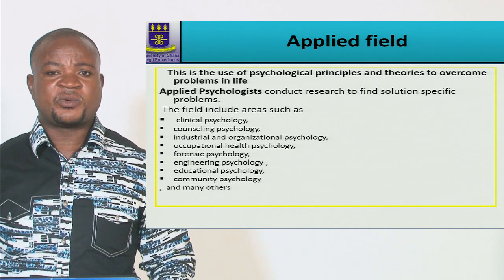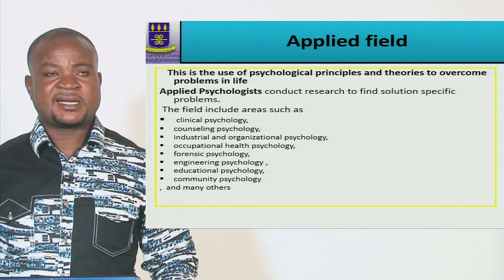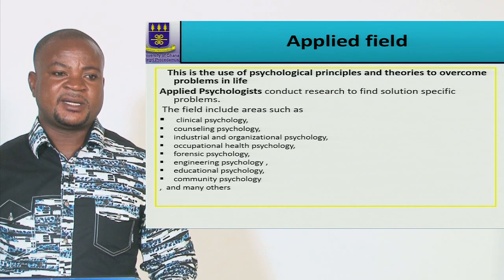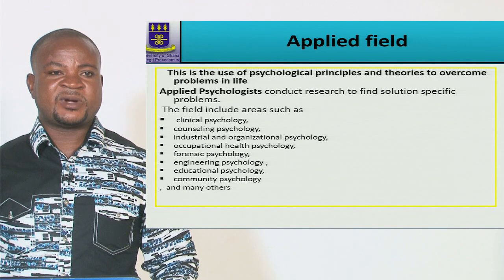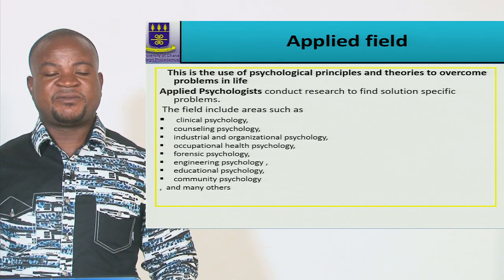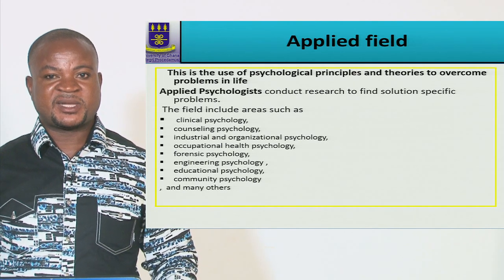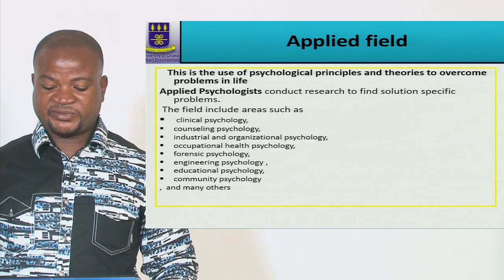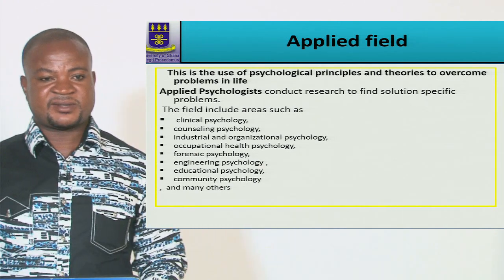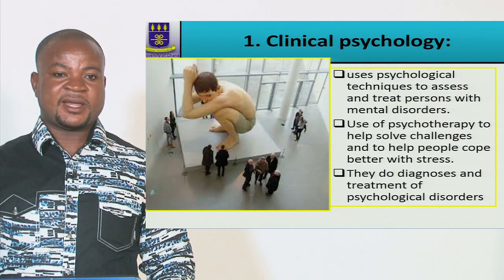Psychology is one of the fastest growing disciplines. The American Psychological Society has registered about 56 various subdivisions within psychology — they call them chapters. So today we look at the various fields and see what they are really involved with.